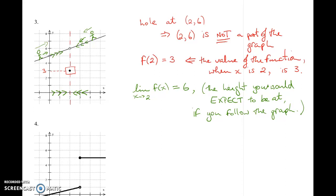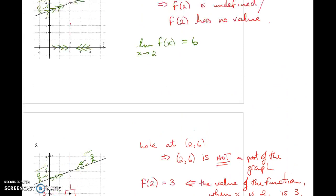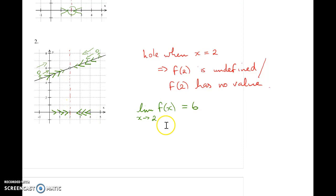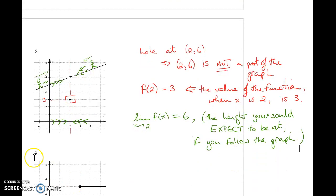Hopefully that's clear. The difference between examples 2 and 3: in example 2, the value of the function wasn't defined at all at x equals 2, but the limit existed. In example 3, the function does have a specific value at x equals 2 — f of 2 is equal to 3 — but the limit still exists and it's different from the value of the function.